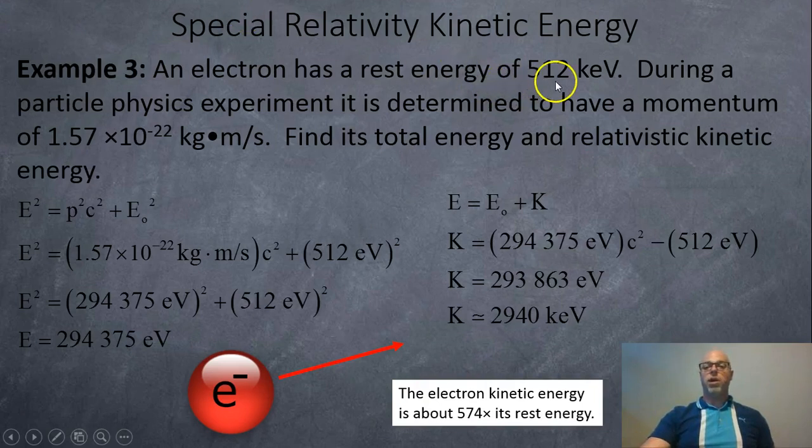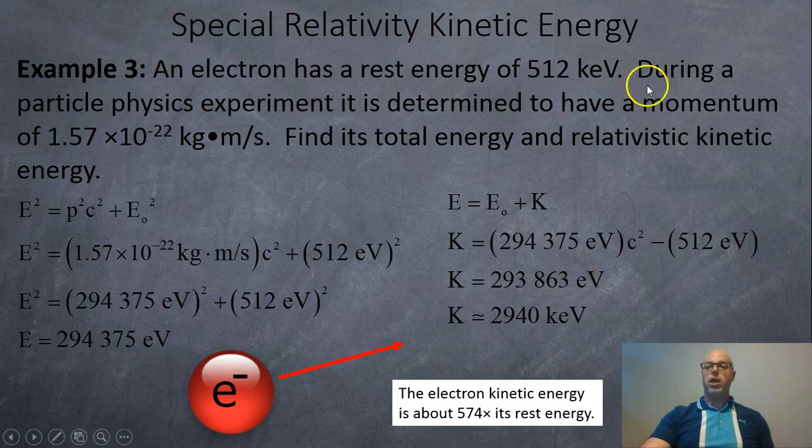Here's an electron with a rest energy of 512 kiloelectron volts. You can look that up if you like. During a particle physics experiment, it's determined to have a momentum of 1.57 × 10⁻²² kilogram meters per second. Find its total energy and then find its relativistic kinetic energy. We're going to use this new equation which relates energy and momentum. Sometimes you don't know the mass of an object and sometimes you don't know exactly the speed, but you do know its momentum from how it interacted with the momentum detector.